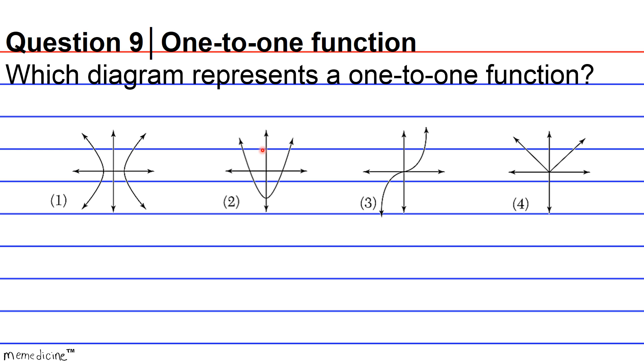So graphically, this means that any horizontal line will intersect the graph of a one-to-one function at most one time. So only one time. That means this is going to eliminate answer choice two, as well as answer choice four, okay?